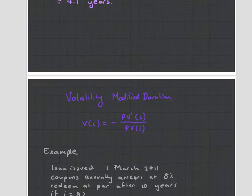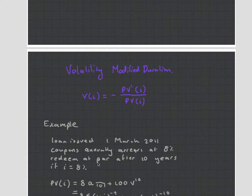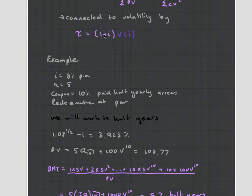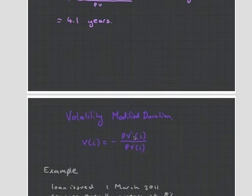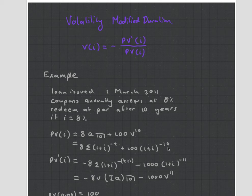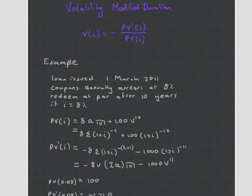The volatility modified duration is just a little bit more sophisticated, and you can calculate it either using the DMT and dividing by one plus the interest rate, or you can take the derivative of the present value, divide it by the present value. You'll start seeing this is very similar to calculus — you're introducing derivatives, looking at different curves. The idea of immunization is to balance your asset cash flows with your liability cash flows, giving protection against interest rate changes.